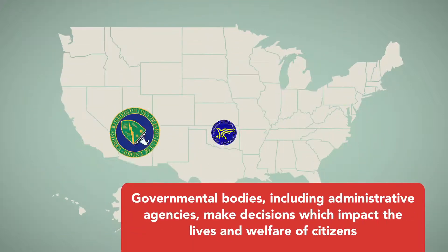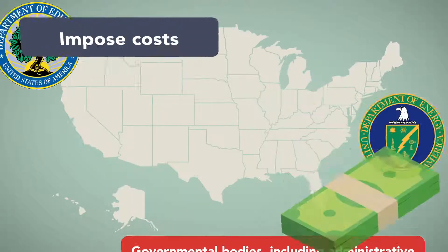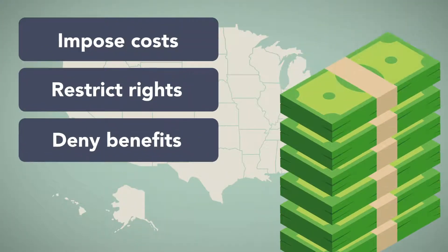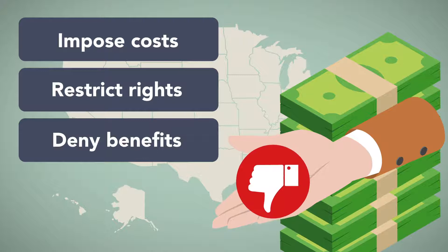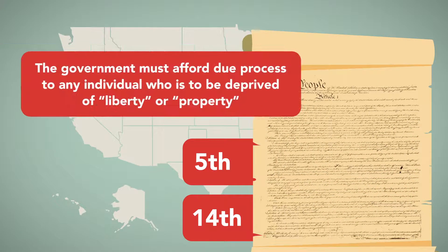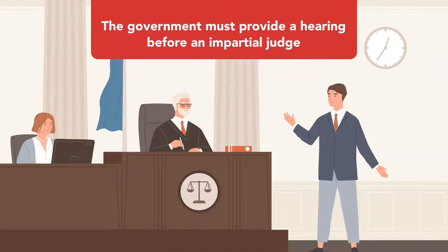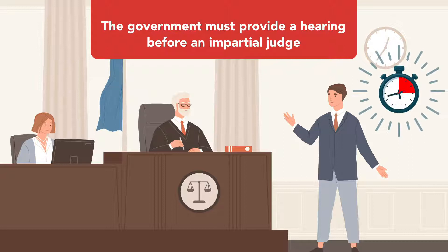Governmental bodies, including administrative agencies, make decisions which impact the lives and welfare of citizens, including decisions which impose costs, restrict rights, and deny access to government benefits. Under the Fifth and Fourteenth Amendments to the Constitution, the government must afford due process to any individual who is deprived of liberty or property. This means that, at minimum, the government must provide a hearing before an impartial judge with adequate notice at which the claimant has a right to be heard.